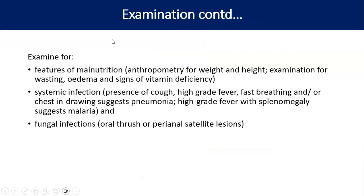In addition to dehydration, assess for malnutrition: anthropometric measurements, weight for height, examination for wasting, edema, signs of vitamin deficiency, and systemic infection — presence of cough, high-grade fever, fast breathing, chest in-drawing, or hepatomegaly. Assess systemically from head to toe. Also check for fungal infections — oral thrush or perianal satellite lesions — which point to advanced HIV disease.